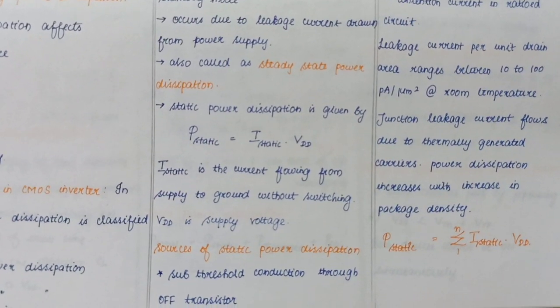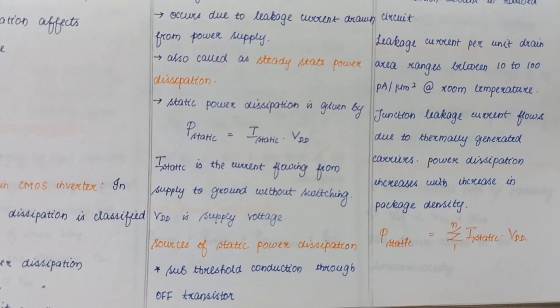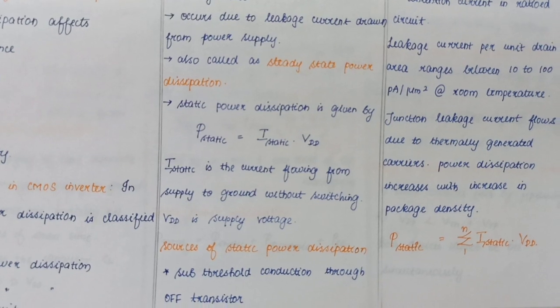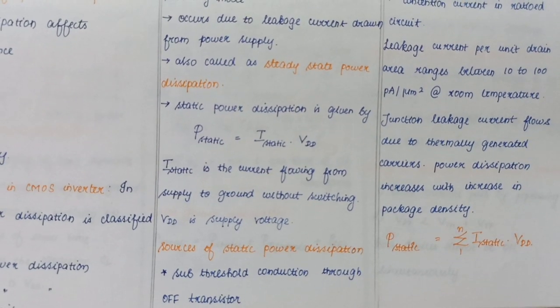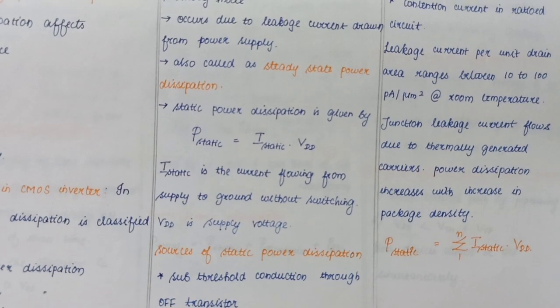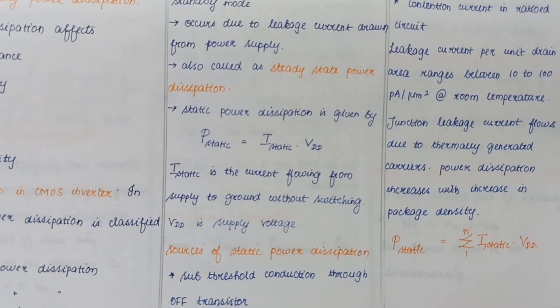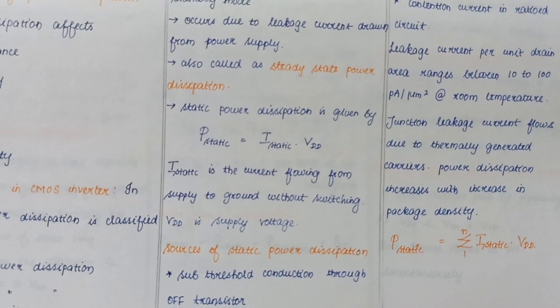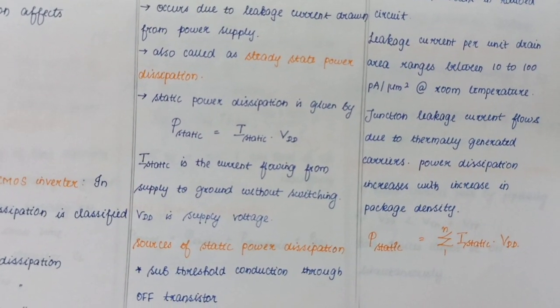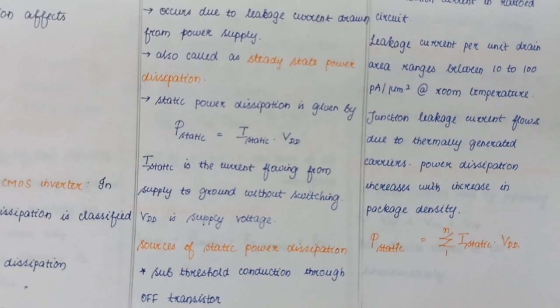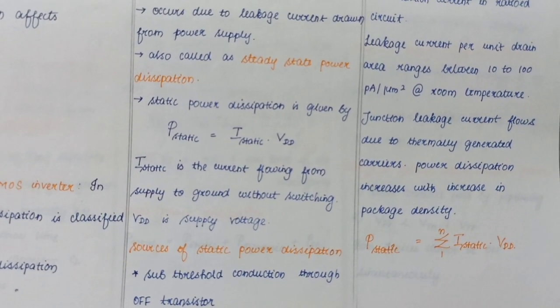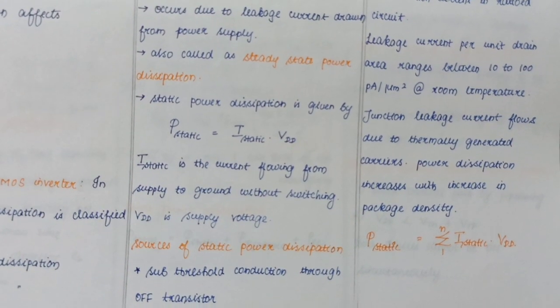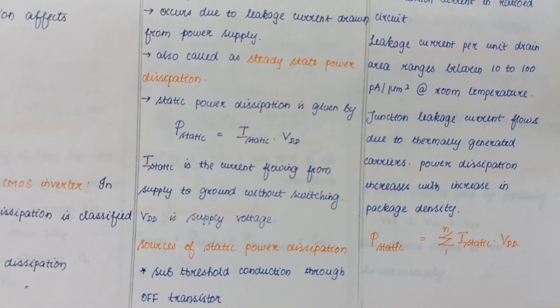Junction leakage current occurs due to heat produced in the circuit from thermally generated carriers. When the temperature is higher, the number of carriers is higher. This power dissipation increases with increase in package density. P static equals summation 1 to N of I static into VDD, where N is the number of devices or transistors. This is the total static power.